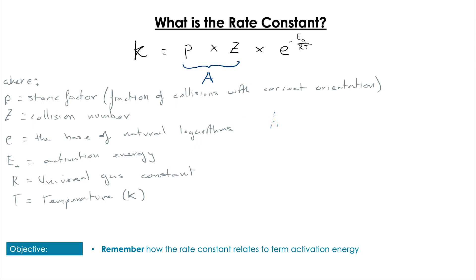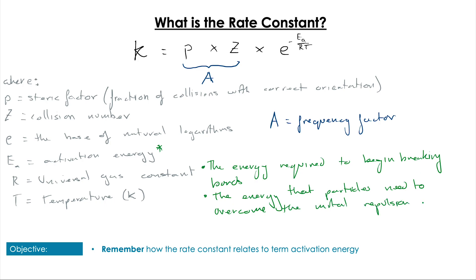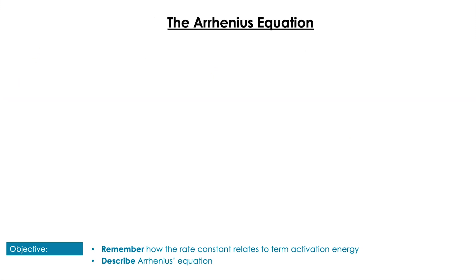We can simplify that a little bit by thinking about p and z as a term together called A, as the frequency factor - the number of collisions that have correct orientation. Now remember, activation energy is the energy that is required to break the bonds that allow a reaction to begin and the amount of energy that particles require to overcome the mutual repulsion of their electron shells.